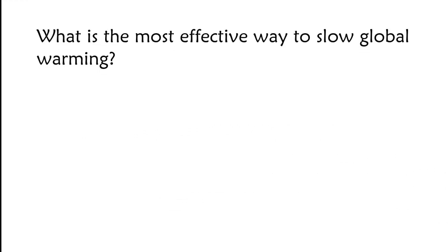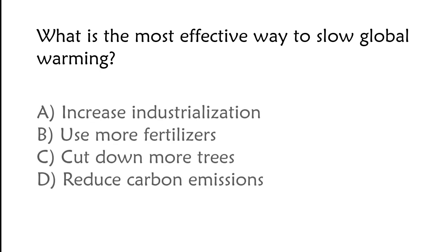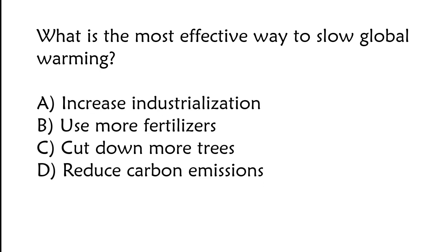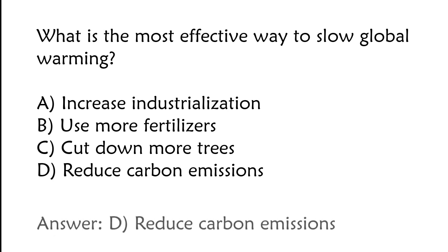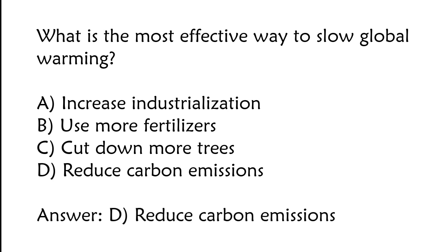What is the most effective way to slow global warming? A) Increase industrialization, B) use more fertilizers, C) cut down more trees, D) reduce carbon emissions. The correct answer is option D, reduce carbon emissions.